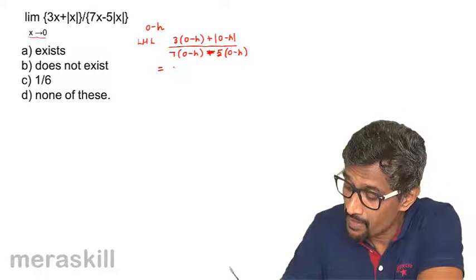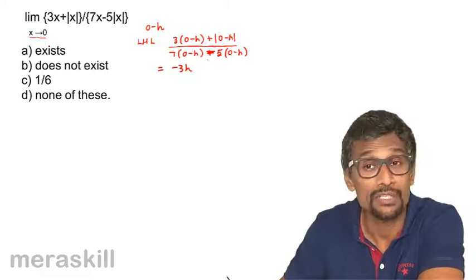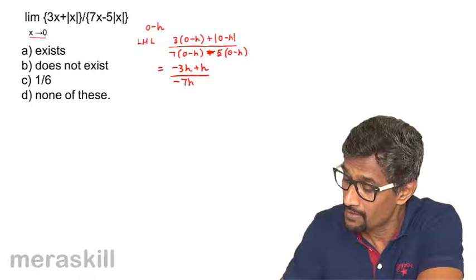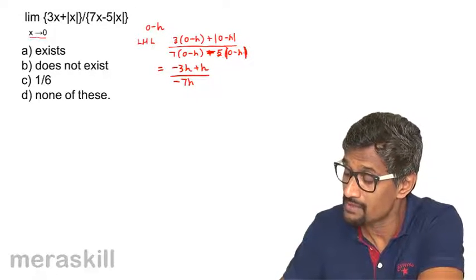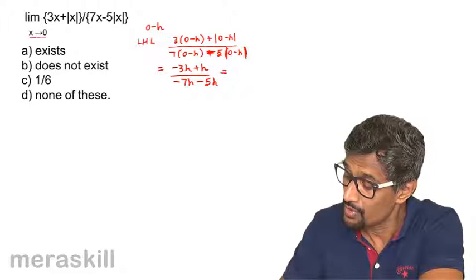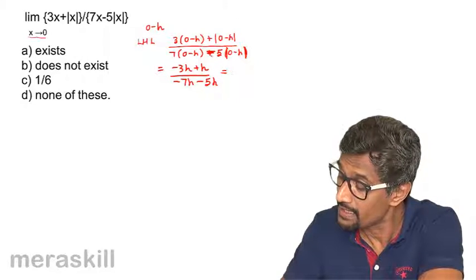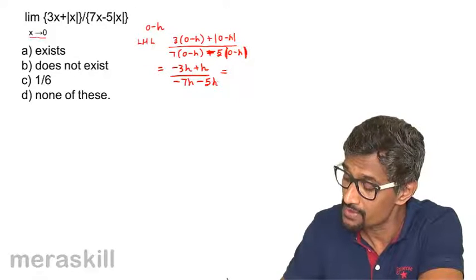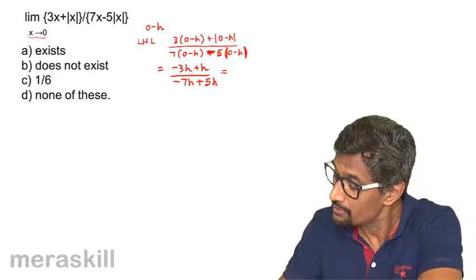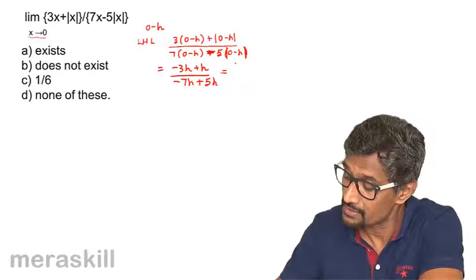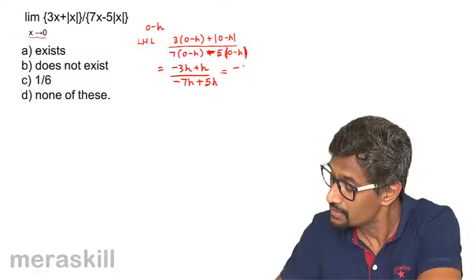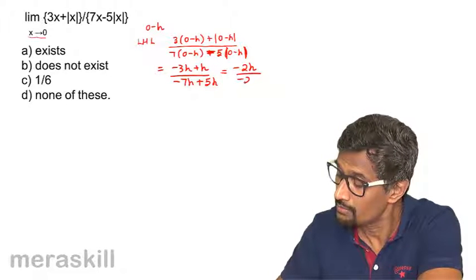This becomes minus 3h; the absolute value of (0 minus h) is plus h. The denominator becomes minus 7h minus 5 times h, which is minus 5h. So the numerator is minus 3h plus h, and we get minus 2h in the numerator. The denominator is minus 7h plus 5h, giving minus 2h. So we get minus 2h upon minus 2h.